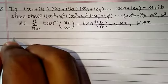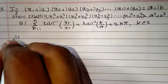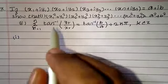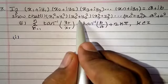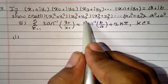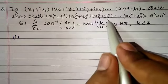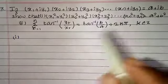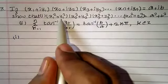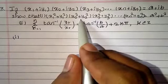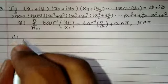First proof. The expression x1² + y1² into x2² + y2² into x3² + y3² is the real part squared plus imaginary part squared for each complex number.